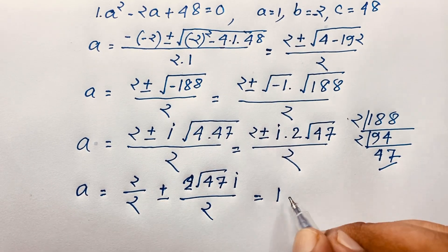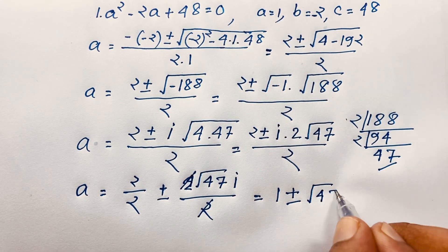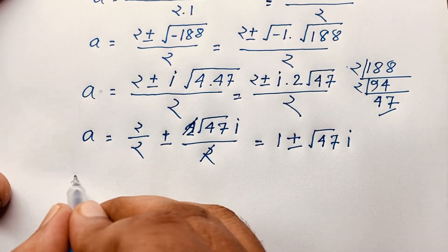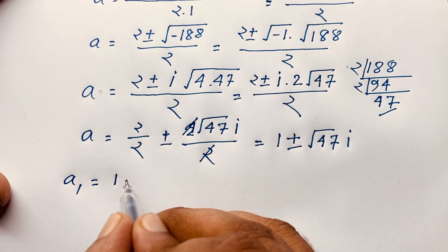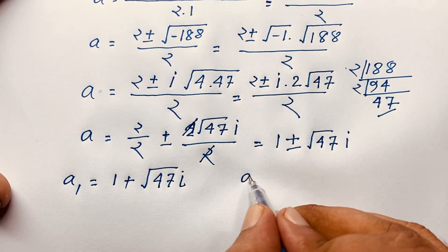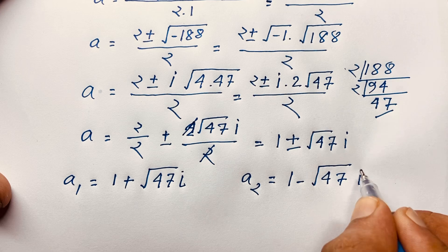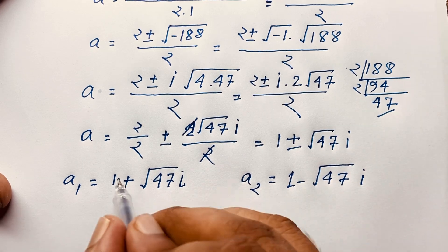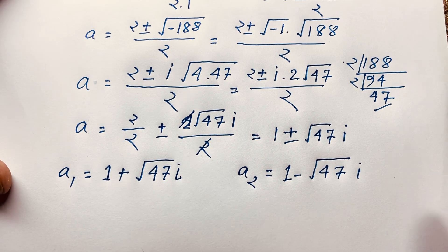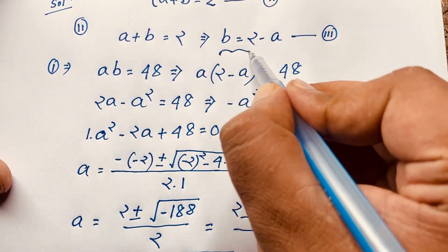So our final answers are: a₁ equals 1 plus square root of 47 times i, and a₂ equals 1 minus square root of 47 times i. We find two solutions, both are complex numbers — there is no real solution. Now, since v equals 2 minus a, we use our third equation.